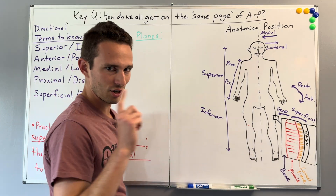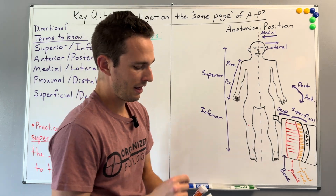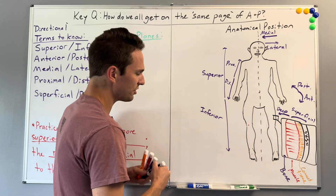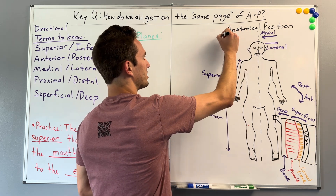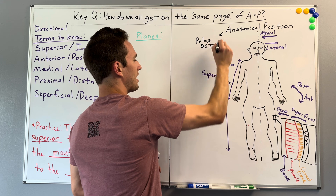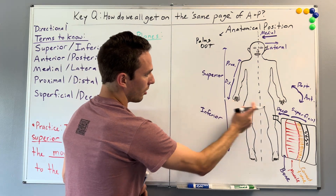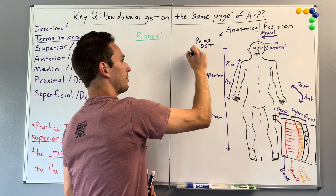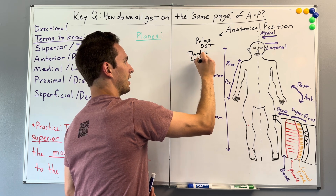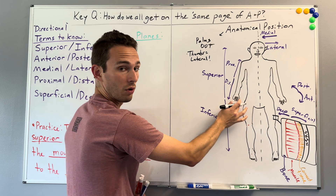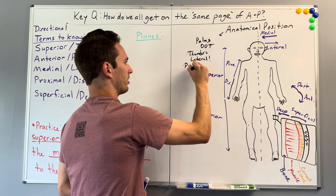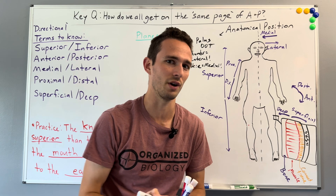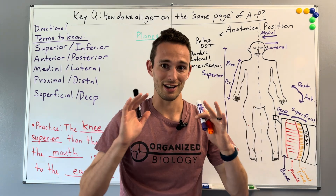One little note your anatomy teachers will likely ask on a test: in reference to the pinky, what is the thumb? We need to know that palms are out in anatomical position. That means your thumbs are always going to be more lateral. Whereas your pinkies will be more medial. So remember: thumbs are lateral, pinkies are medial. That will be a test question, and if you get it right, comment below.